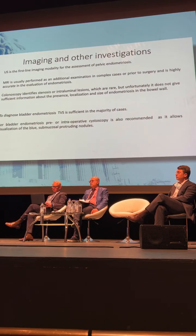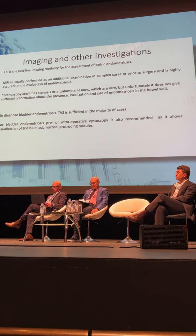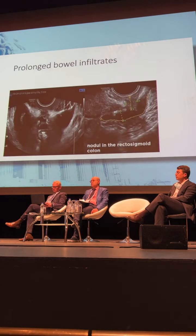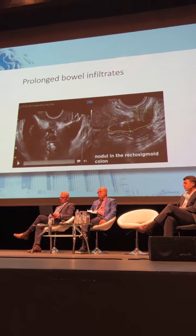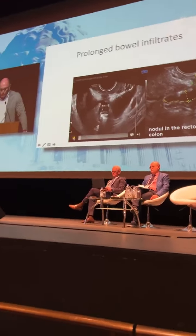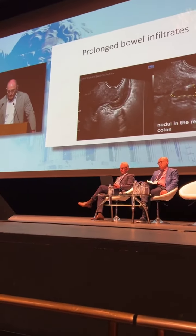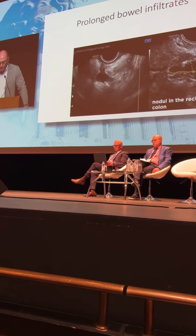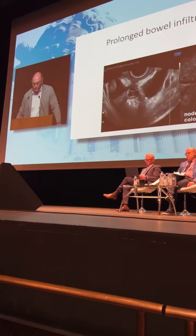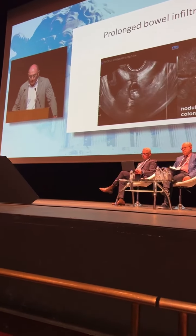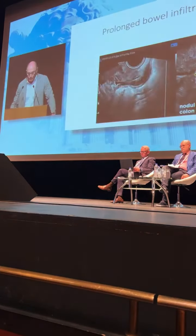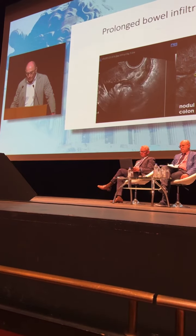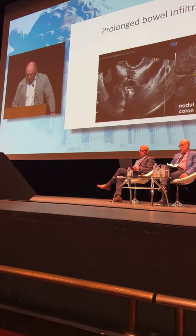For me, ultrasound exam is more important than MRI, but I perform both examinations before surgery. This case shows the location and size of the nodule. When the nodule is so long — more than 7 cm — and so deep — more than 12 mm — we have to plan radical surgery instead of discoid resection or shaving.